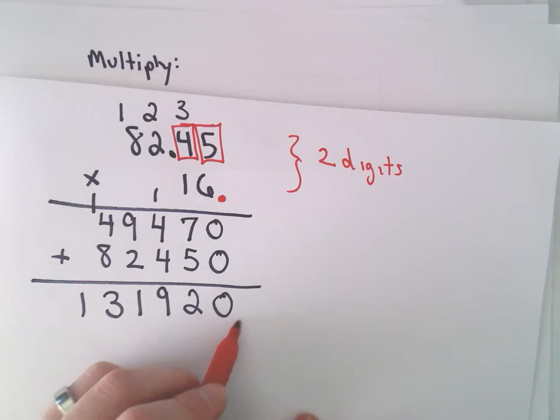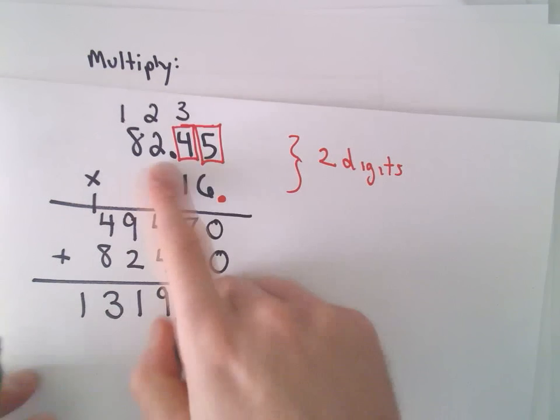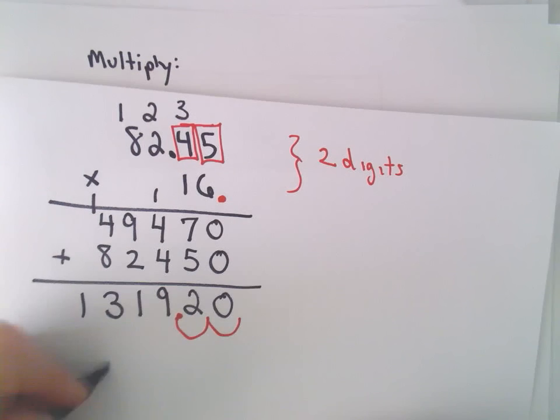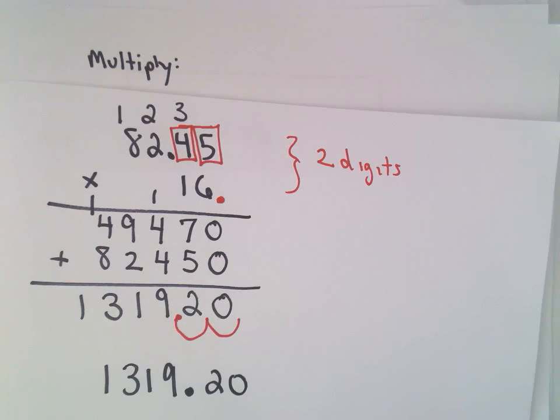So I start all the way to the right of the number, then I just move it one, two places. So what it says is, it says if we multiply 82.45 times 16, we'll be left with 1,319.20.